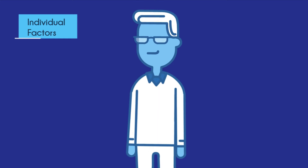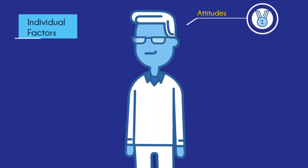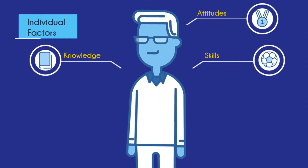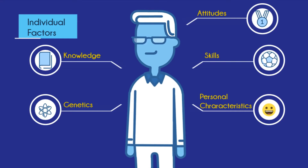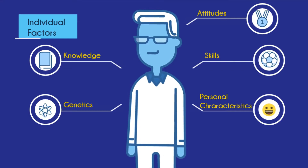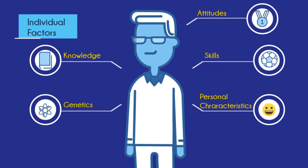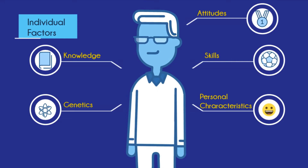Individual factors include the person's attitudes, knowledge, skills, genetics and personal characteristics. A person who knows that health includes five interacting dimensions and understands what a good diet is and the recommended levels of physical activity is more likely to have good health.